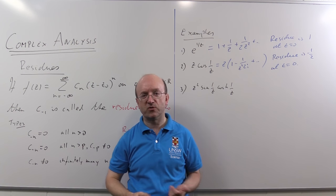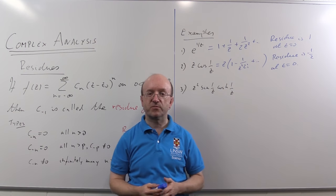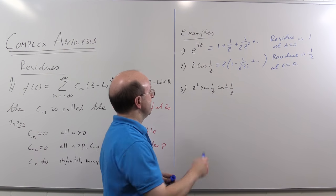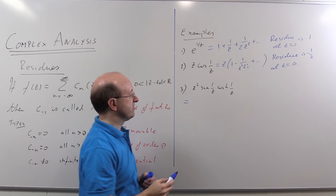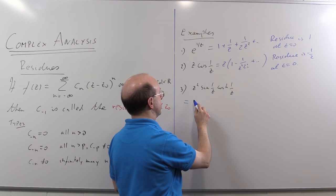The third example here is a bit more complicated because I've got a product of things to calculate. We need to write down the series. Again we're looking at the residue at z equals zero because those are the only singularities.